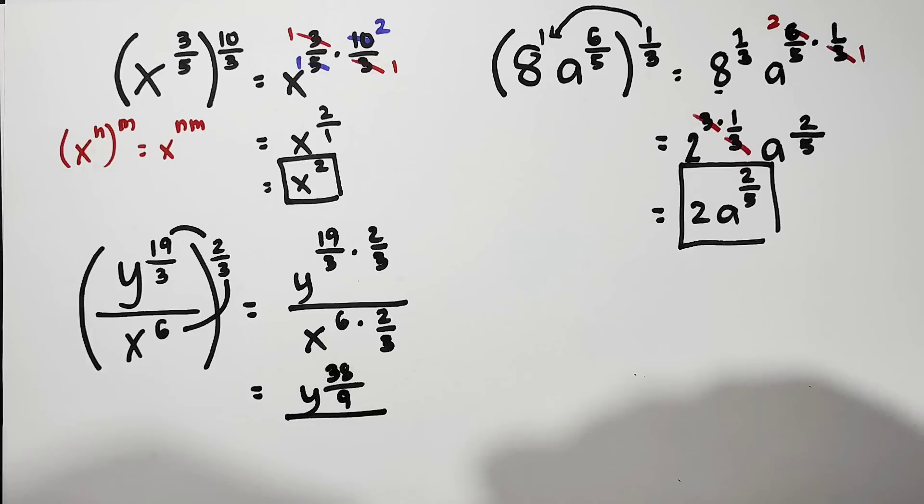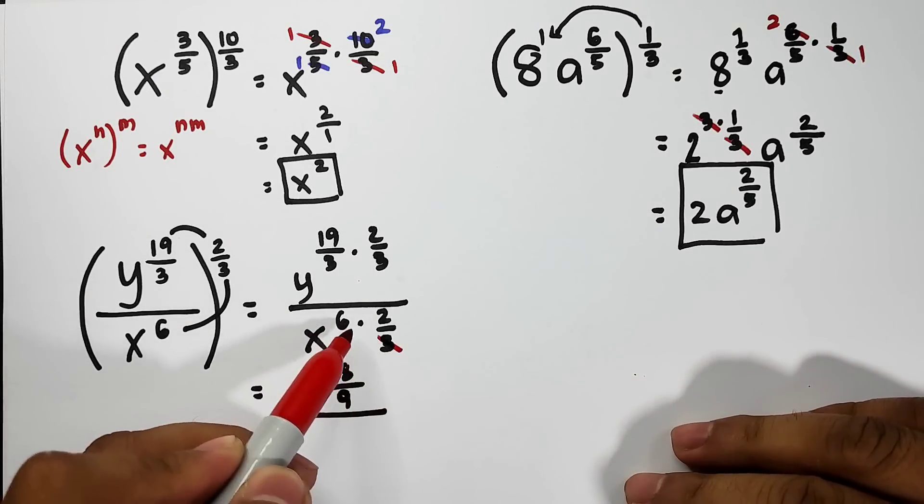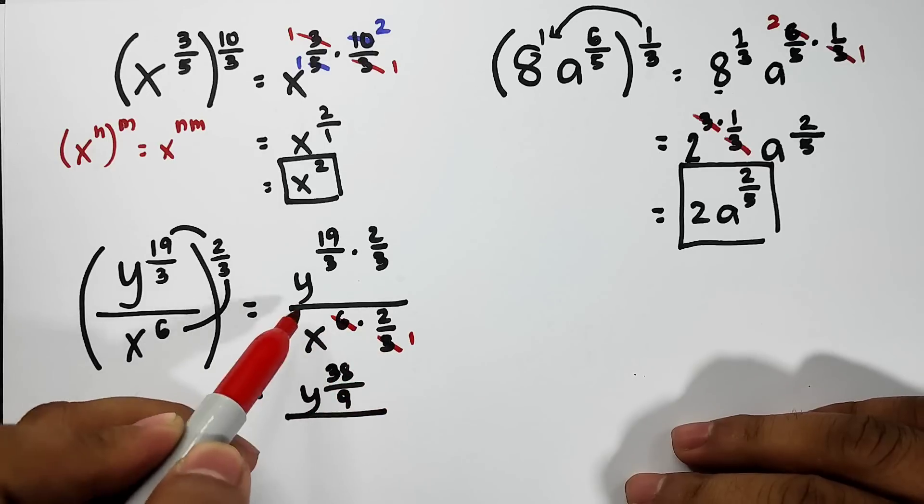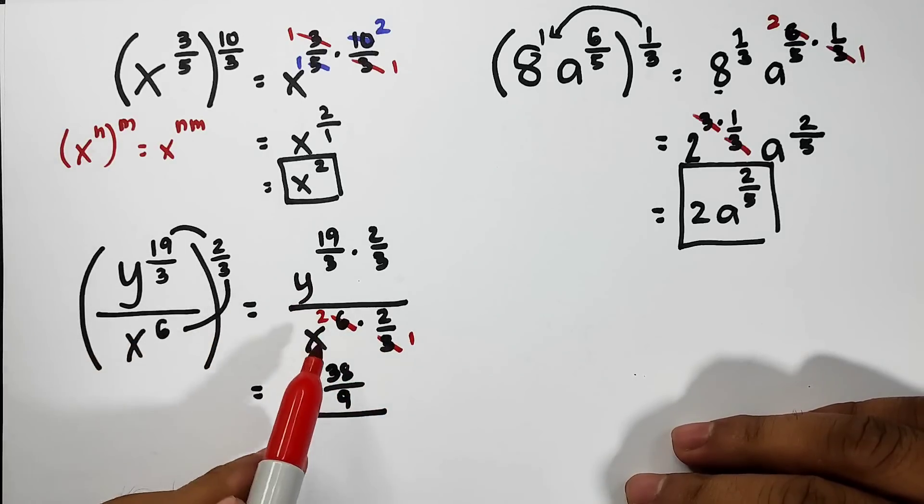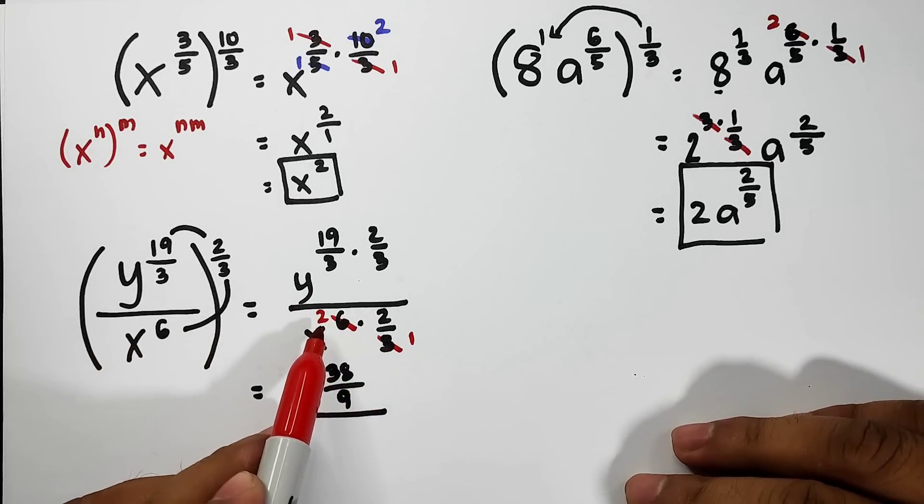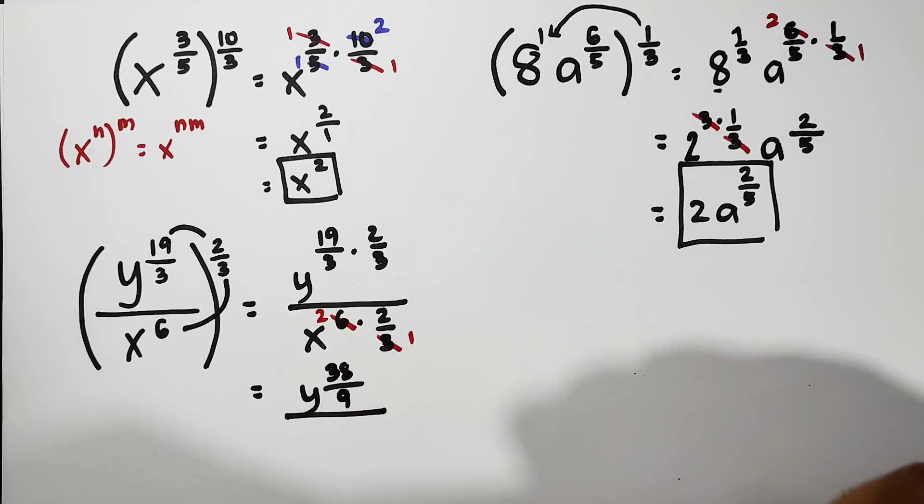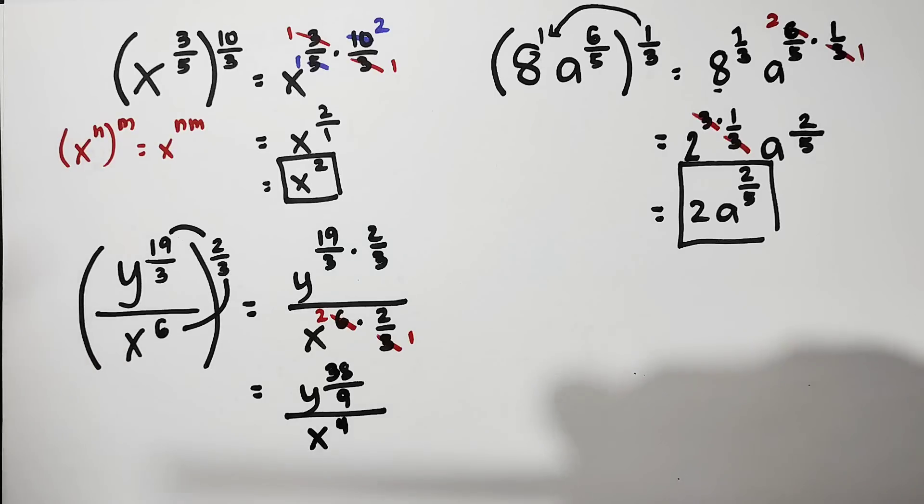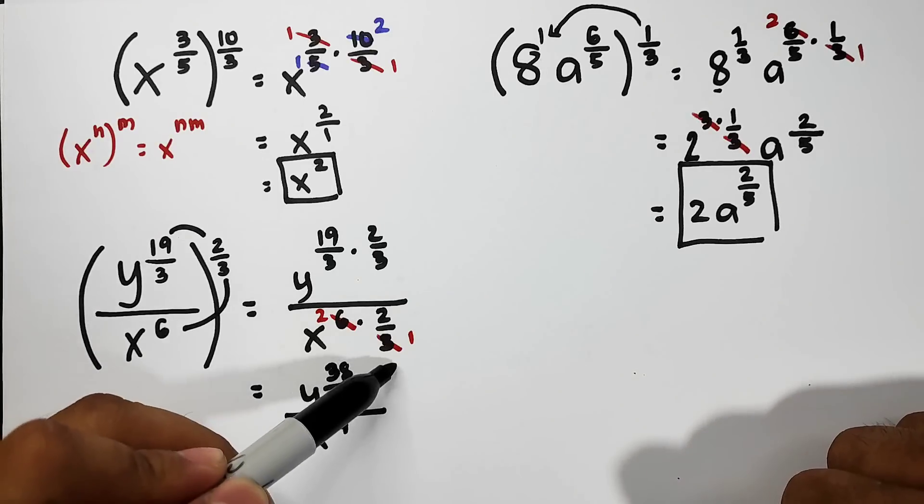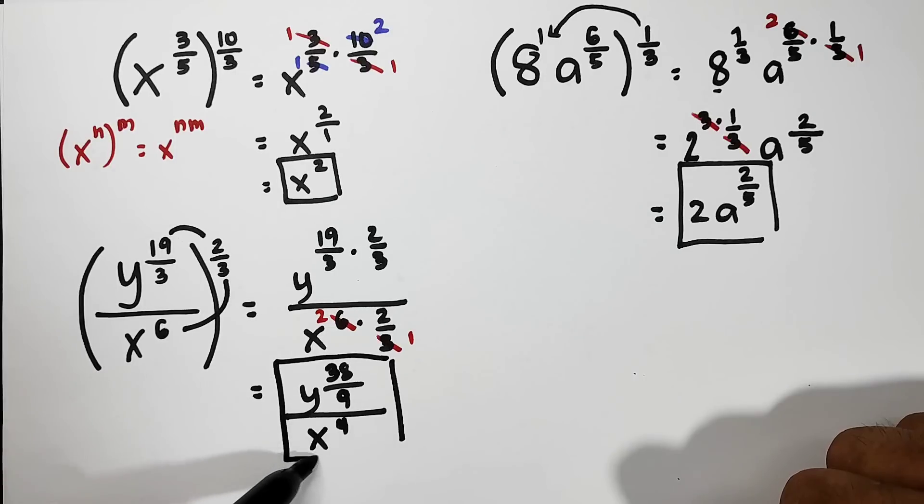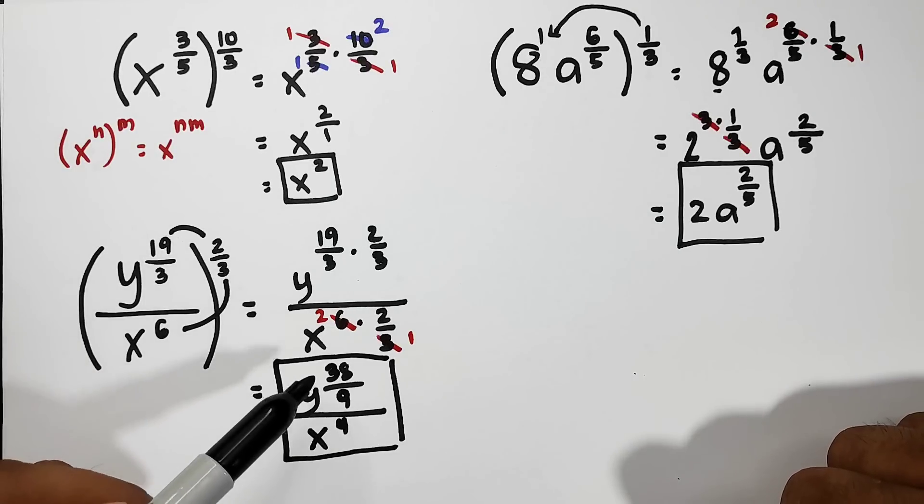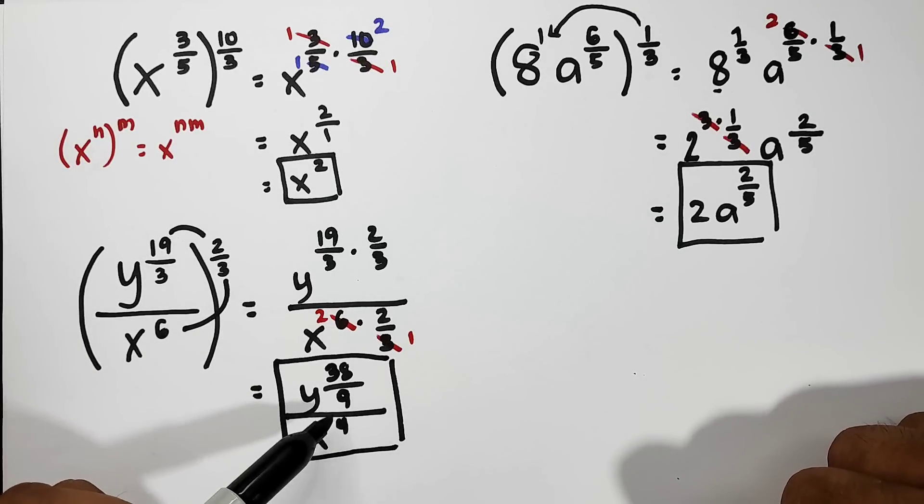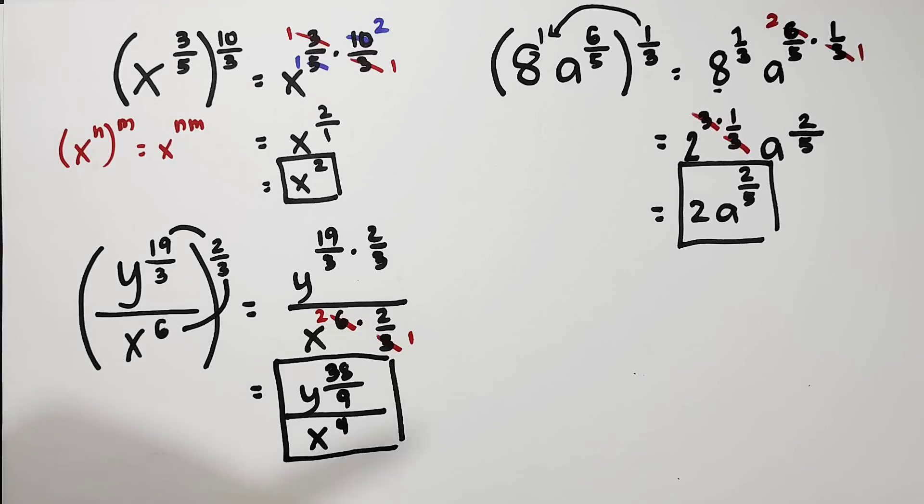For the x variable, notice we have 6 and 3. Let's cancel the 3, it becomes 1. The 6 becomes 2, so 2 times 2 is 4, meaning the exponent of x is 4. So our answer here right now is simply y raised to 38 over 9 over x raised to the 4th power. So I hope guys you learned how to simplify the rational exponents.